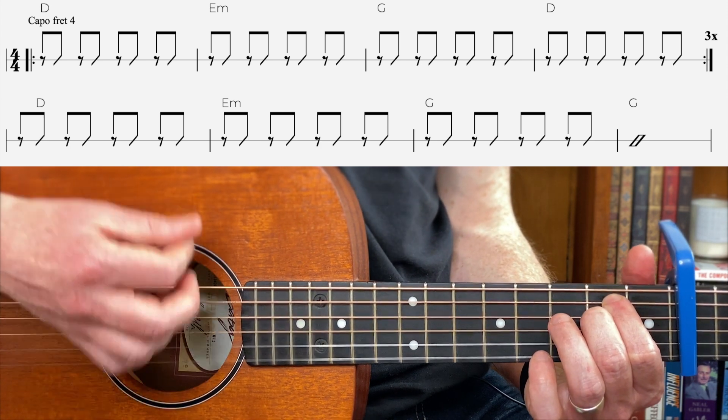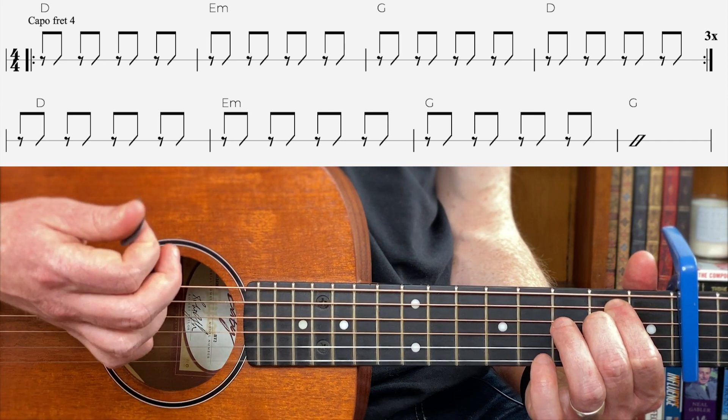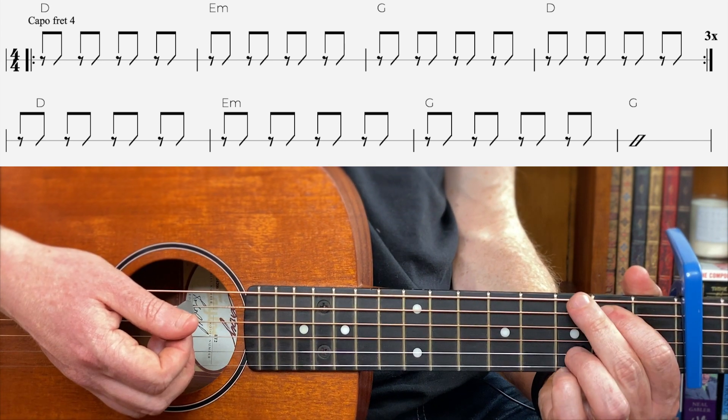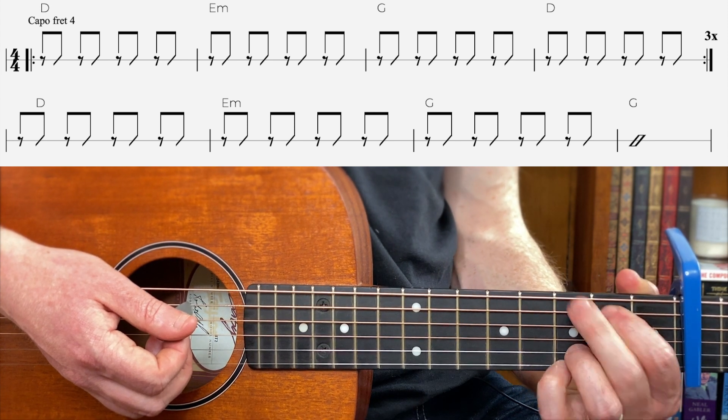So just down, up, down, up like that. And you're going to do that on D, E minor, G and D.